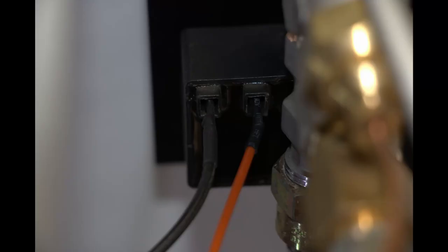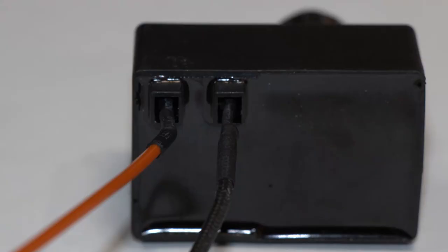Make sure the sparker and ground wire are connected properly. The orange sparker wire and black ground wire should be connected to the back of the sparker box. The orientation of the wire connections on the back of the sparker does not matter. Just make sure both are connected.